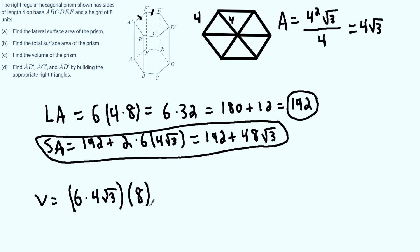So, we have 6 times 4 is 24. 8 times 4 times 8. Well, 8 times 4 is 32. 2 times 8 is 16, plus 3 is 19, 192. So, we get 192 times the square root of 3. And that is our volume.